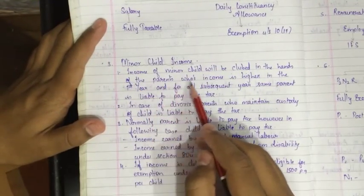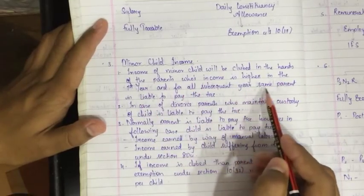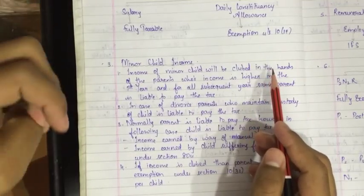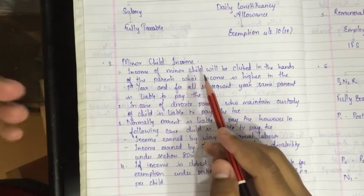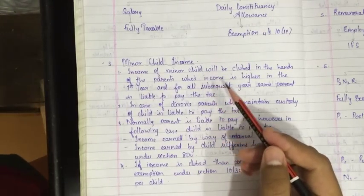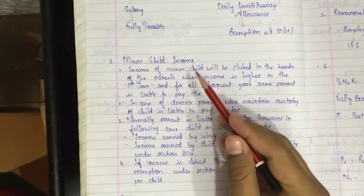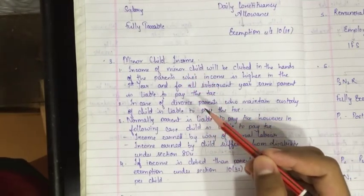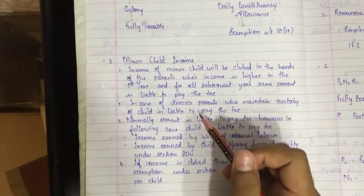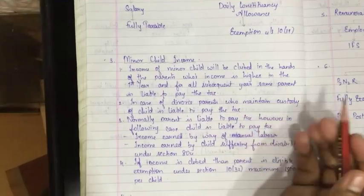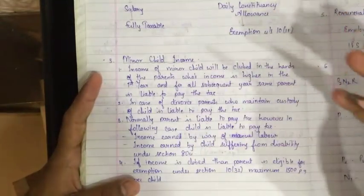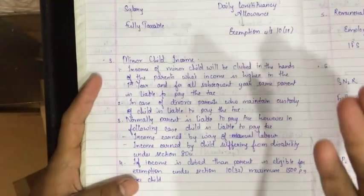For minor child income: income will be clubbed in the hands of the parent whose income is higher in the first year, and for all subsequent years the same parent is liable to pay tax. Once the minor child's income is added to the father's income, for all subsequent years it will remain with the father even if his income later becomes lower.